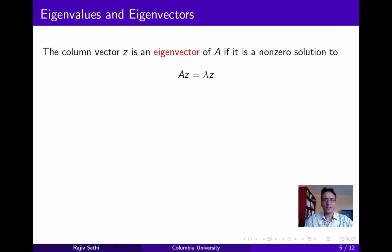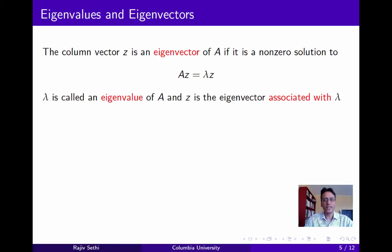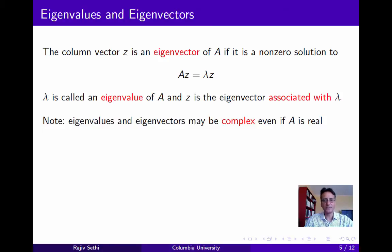Next we define eigenvectors and eigenvalues. We say that a column vector Z is an eigenvector of a matrix A if it's a non-zero solution to the equation AZ equals lambda Z, for some real number lambda. Lambda is called an eigenvalue of A, and Z is the eigenvector associated with lambda. Note that eigenvalues and eigenvectors may be complex, even if A is real.